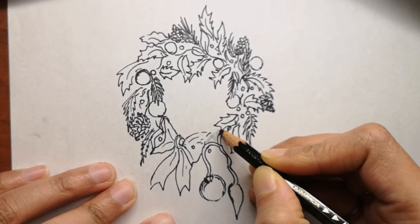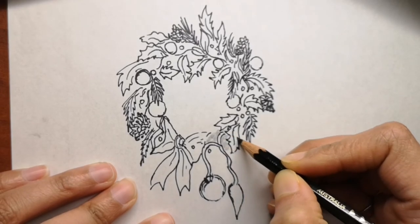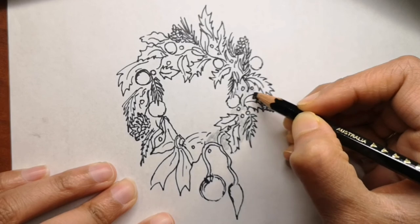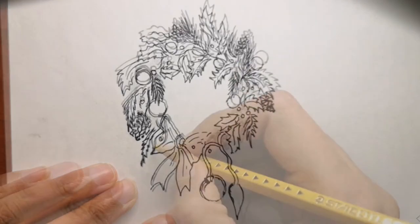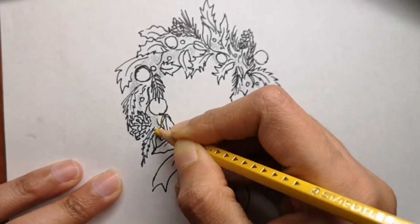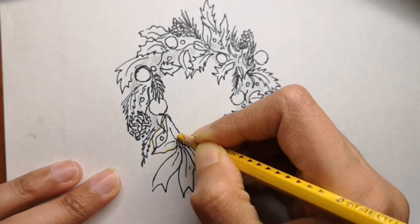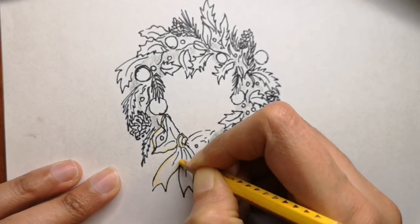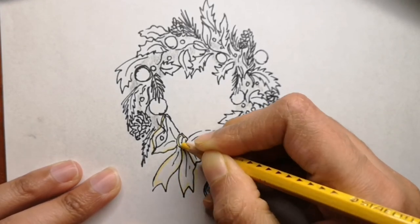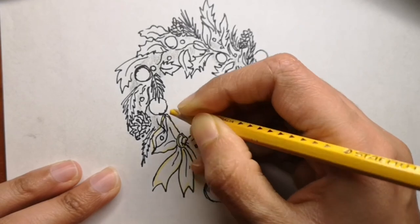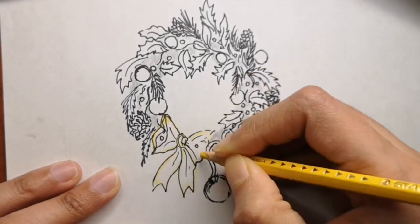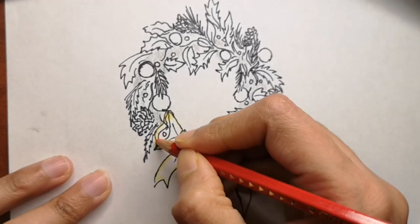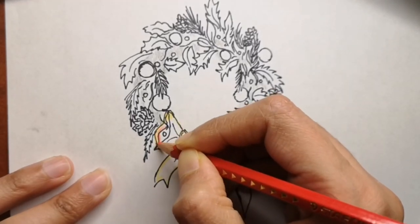I've also heard that Christmas wreaths symbolize the torn crown that Jesus wore. Christmas wreaths are often made with the colors of red, green, white or purple traditionally symbolizing Jesus's blood, life, joy and sacrifice or forgiveness.